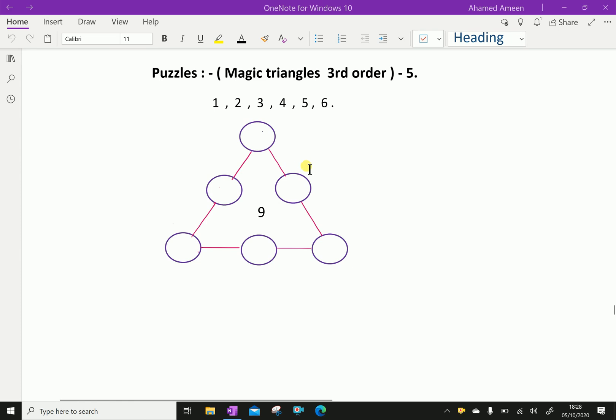Look at this figure. Here, there are six empty spaces in the sides of a triangle. So you have to fill the numbers 1, 2, 3, 4, 5, 6 as you wish.